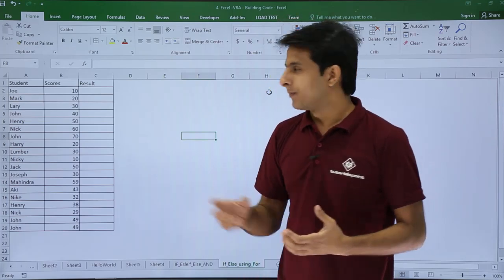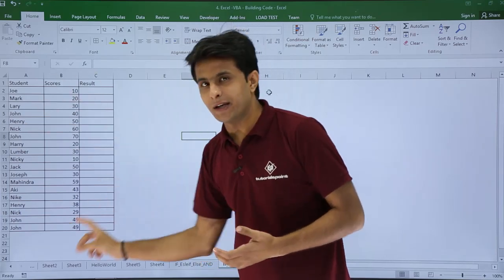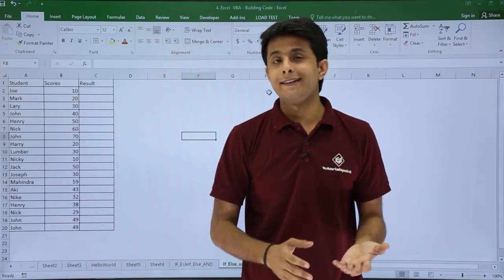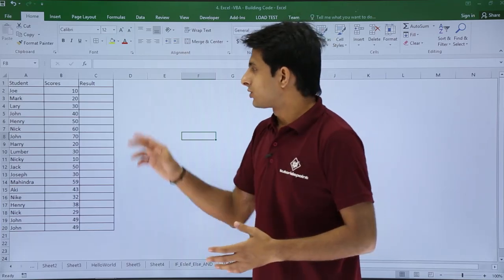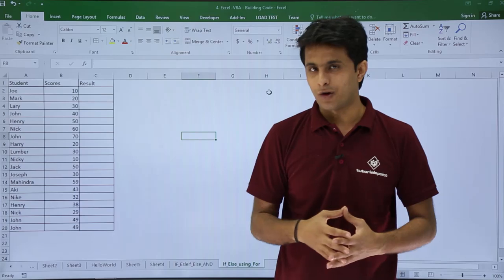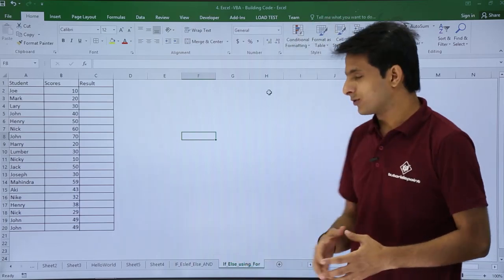That's it, only two conditions, if and else. But why we need to use for loop? Because I have to do it repetitively from row number 2 to row number 20, for 19 times. So for two conditions if else I have to use, and for repetitive tasks I have to use for loop.